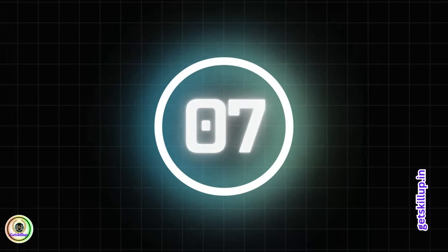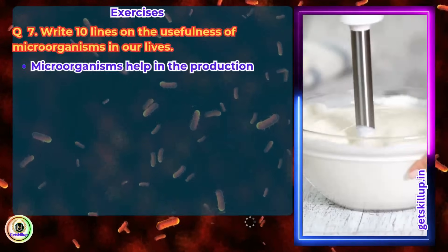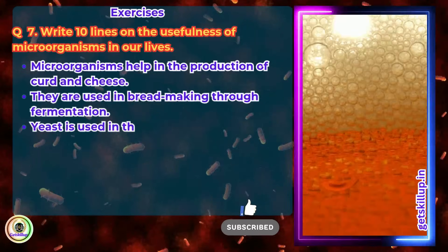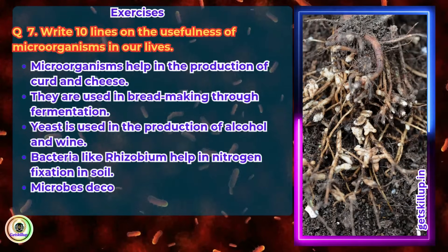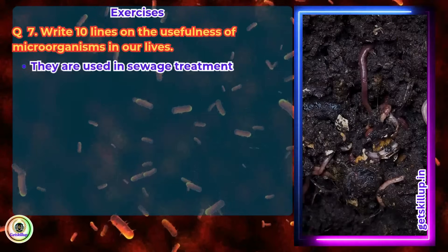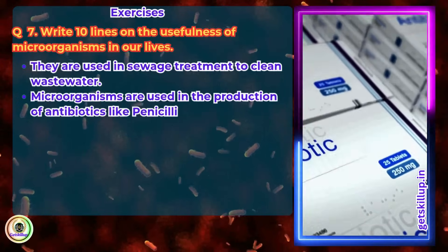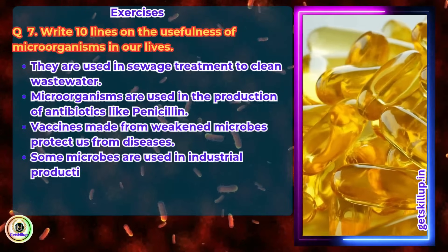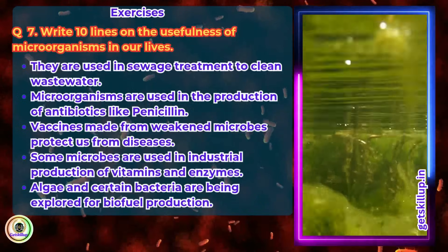Question 7. Write 10 lines on the usefulness of microorganisms in our lives. Answer: Microorganisms help in the production of curd and cheese. They are used in bread making through fermentation. Yeast is used in the production of alcohol and wine. Bacteria like Rhizobium help in nitrogen fixation in soil. Microbes decompose organic waste, recycling nutrients. They are used in sewage treatment to clean waste water. Microorganisms are used in the production of antibiotics like penicillin. Vaccines made from weakened microbes protect us from diseases. Some microbes are used in industrial production of vitamins and enzymes. Algae and certain bacteria are being explored for biofuel production.